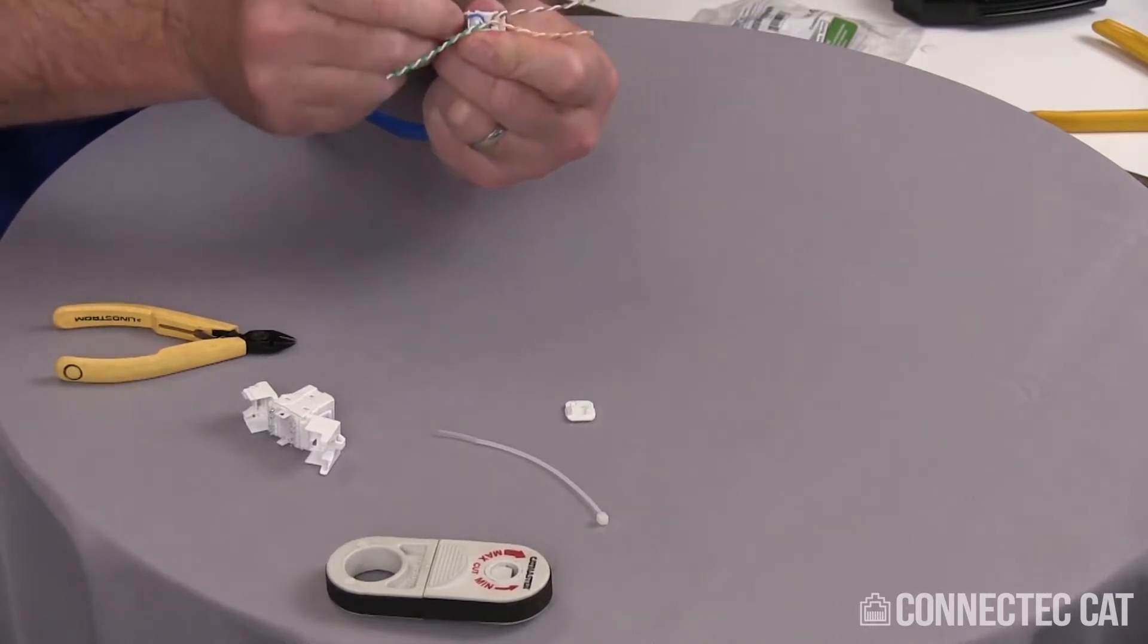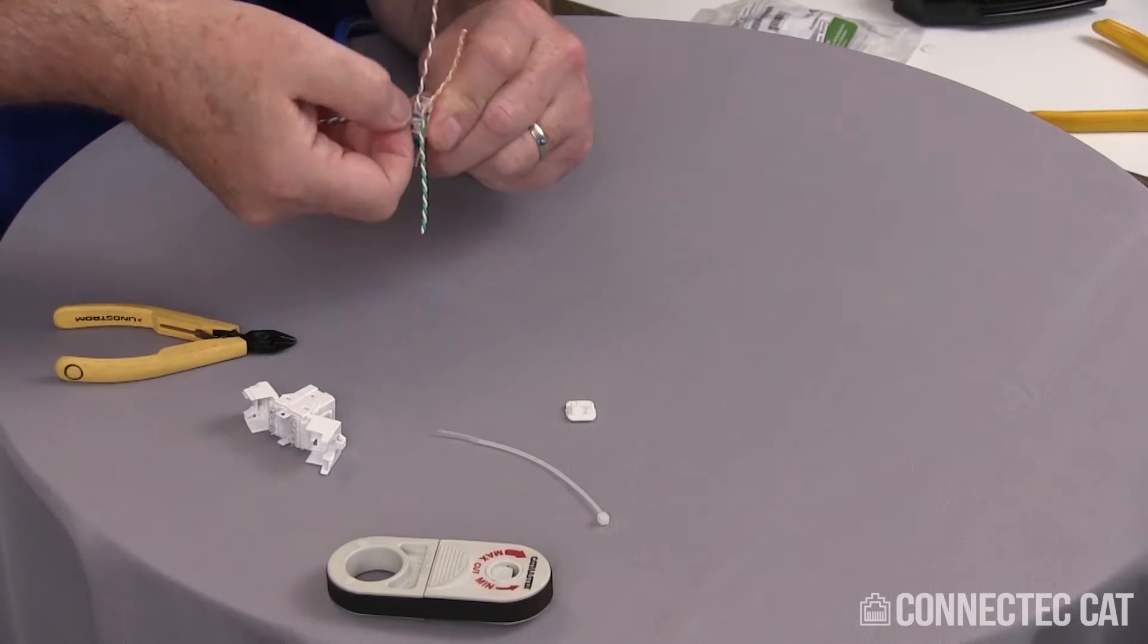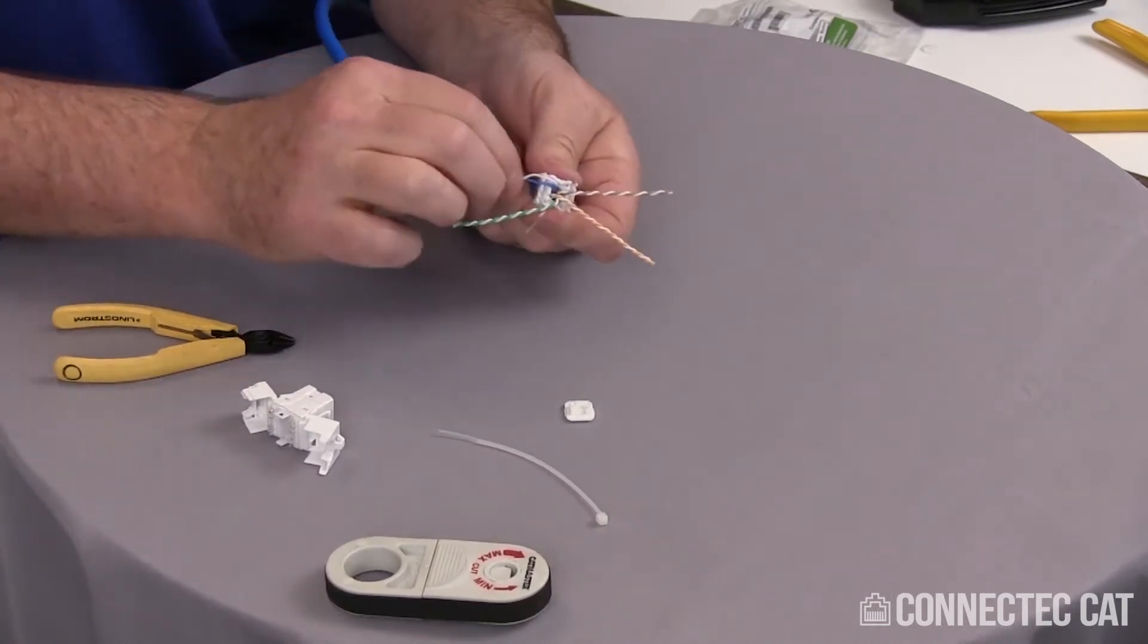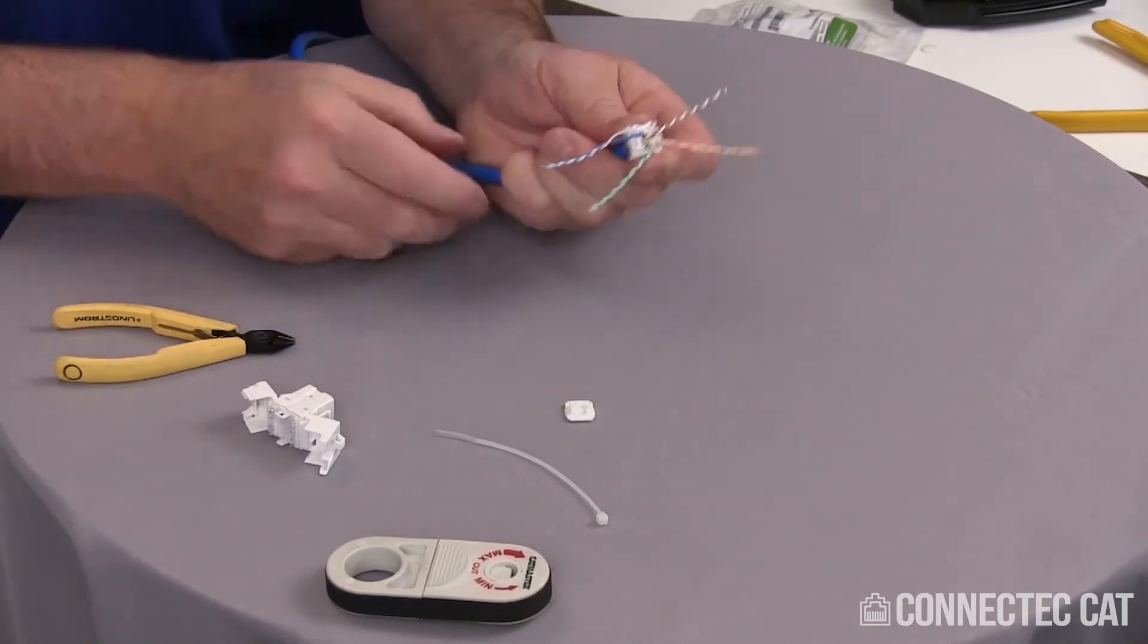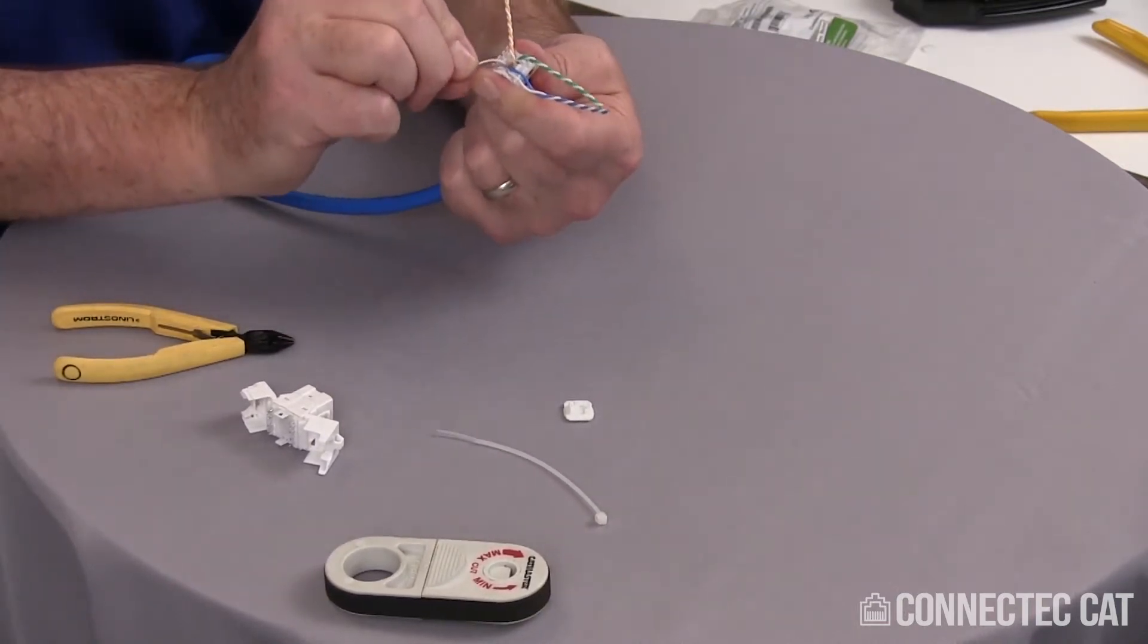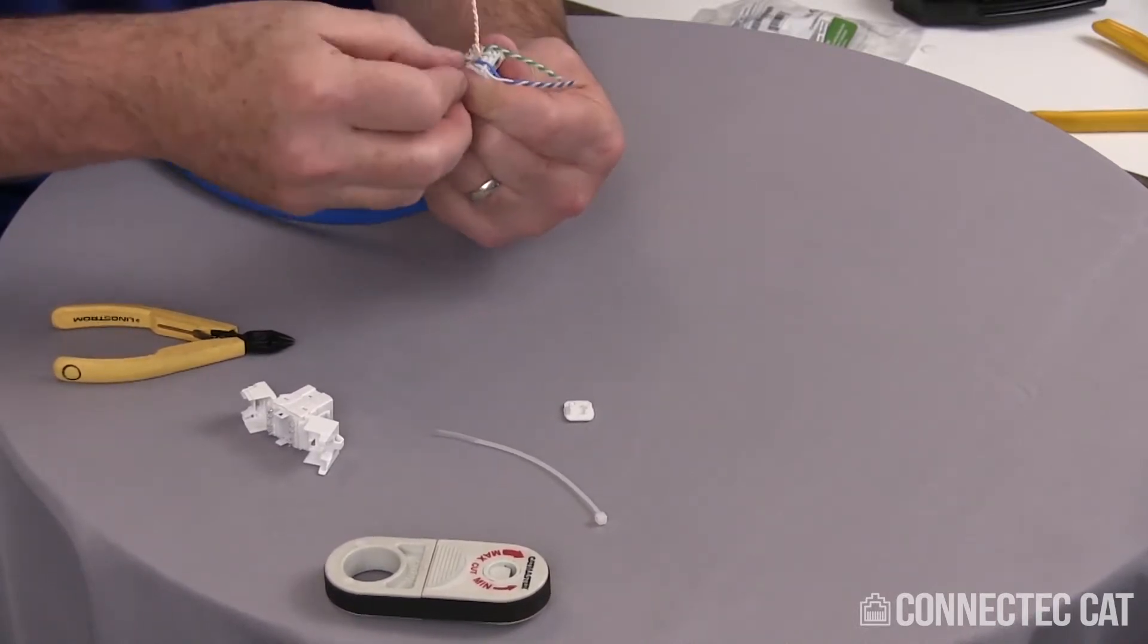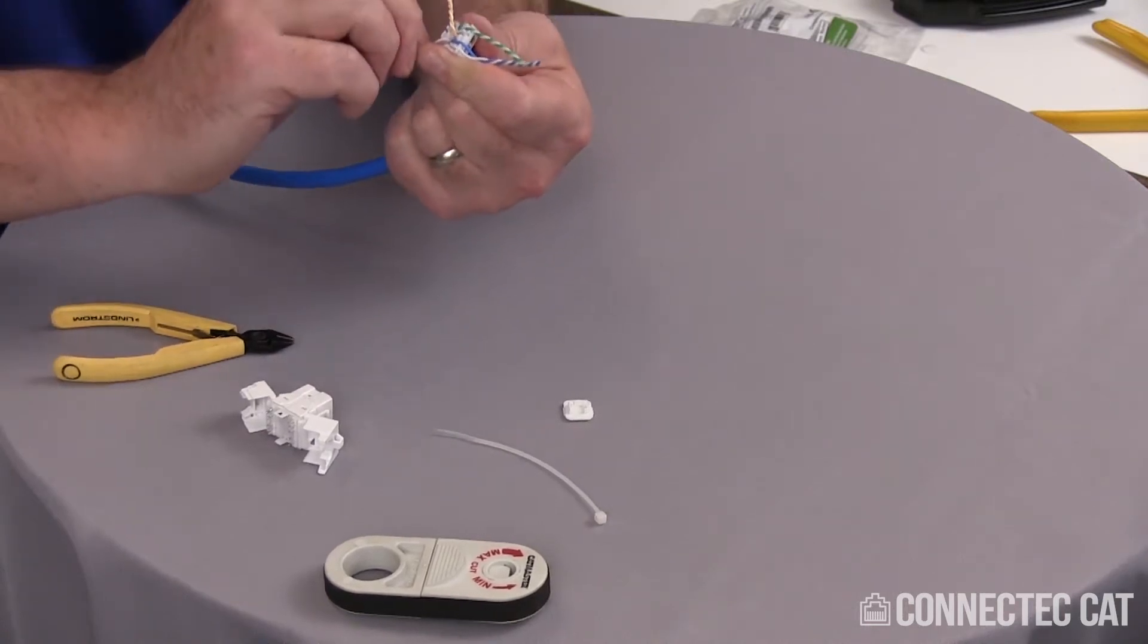On this particular side is blue and white blue. Cat 6A cable is going to potentially have no stripe on what they call the one conductor. So this is white and blue. That's why it's a good idea not to untwist all these where you might mix them up. Untwist just that bottom portion and line these up in the appropriate cable paths.